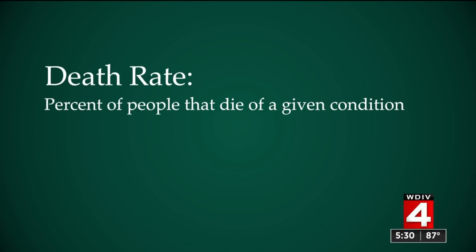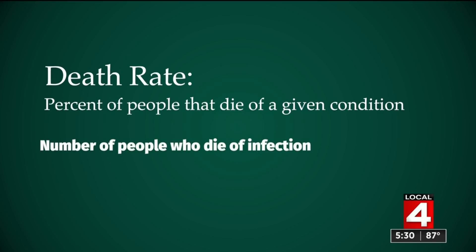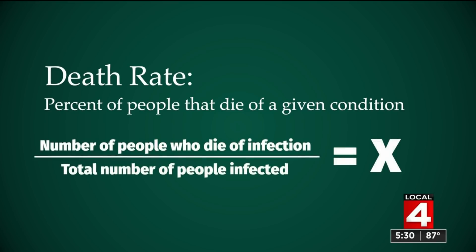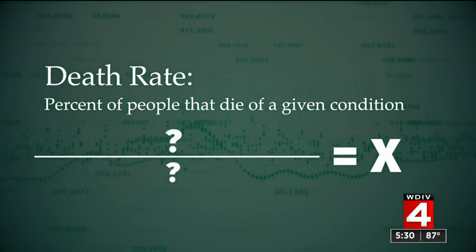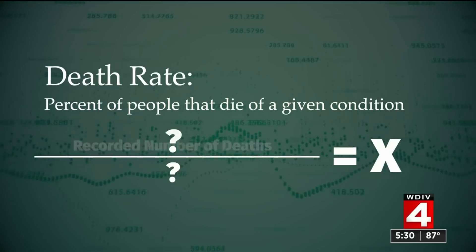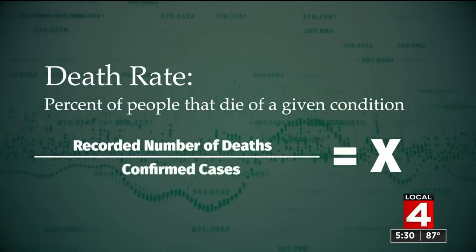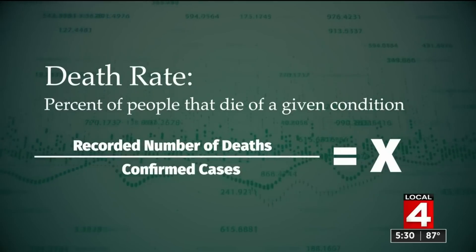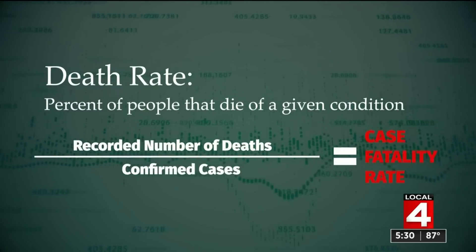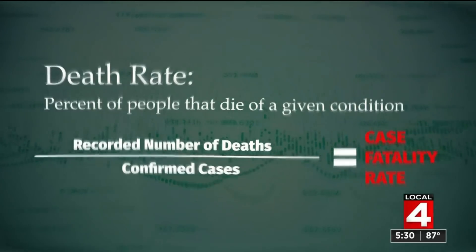The term death rate implies the percent of people that die of a given condition. In order to know that number, you need to know exactly how many people die of the infection and divide that by the total number of people infected. The problem is that neither of those numbers are exactly known. When you divide the recorded number of deaths by the number of confirmed cases, you're actually calculating a case fatality rate.